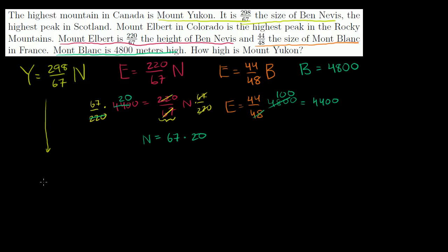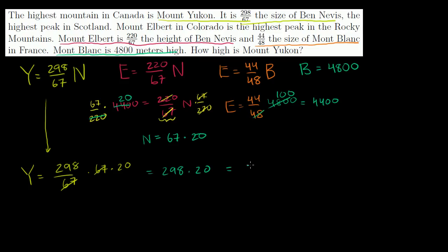Yukon is equal to 298 over 67 times the height of Nevis, and Nevis is 67 times 20. So Yukon equals 298 over 67 times 67 times 20. The 67s cancel, leaving Yukon equal to 298 times 20 meters. 298 times 20 is 5,960 meters. And we are done.